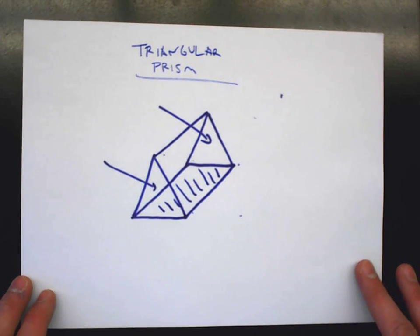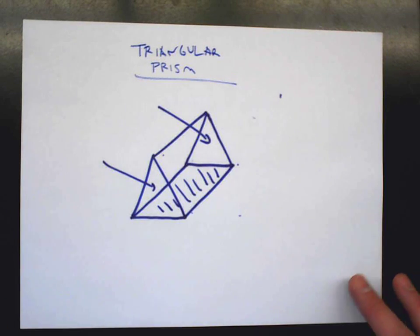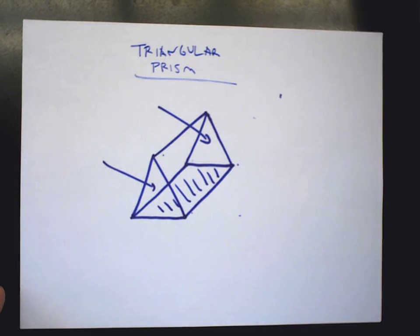So we could probably sit here all day drawing other three-dimensional figures. But those are the ones that we want to try to focus on. A cylinder, a sphere, a cone, a prism, and a pyramid. Mr. Cote, you got, you got any last words? You want to sing or dance or anything for the video? We good? All right. Awesome. See you next time.